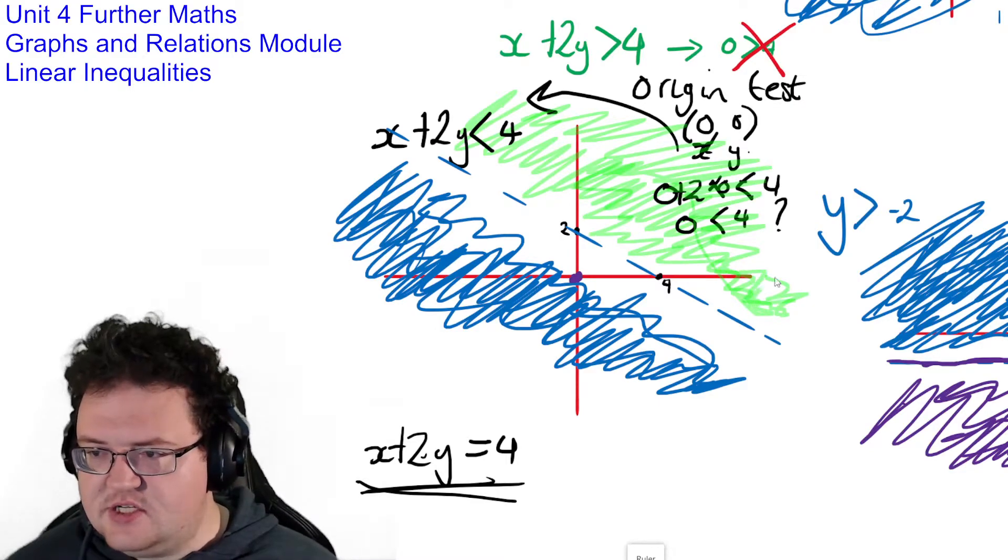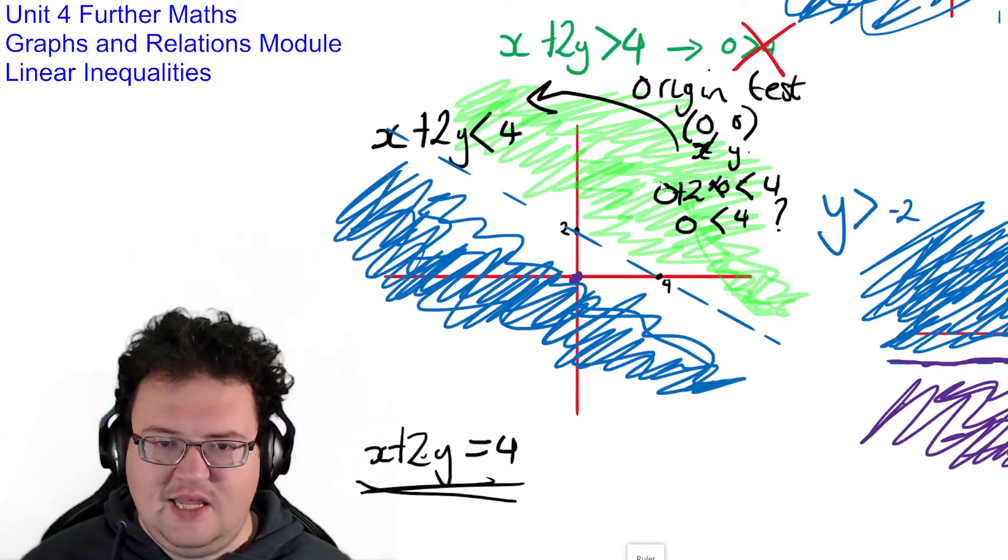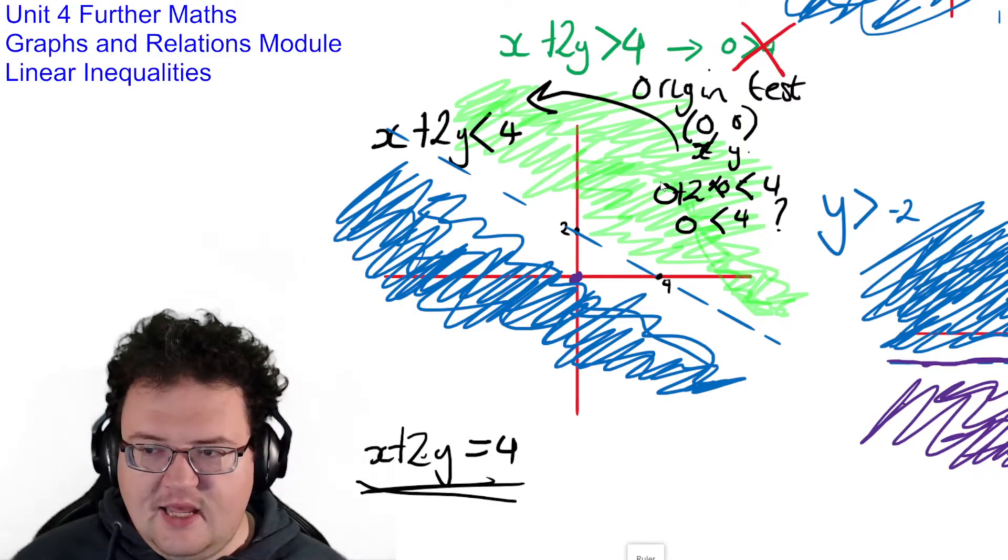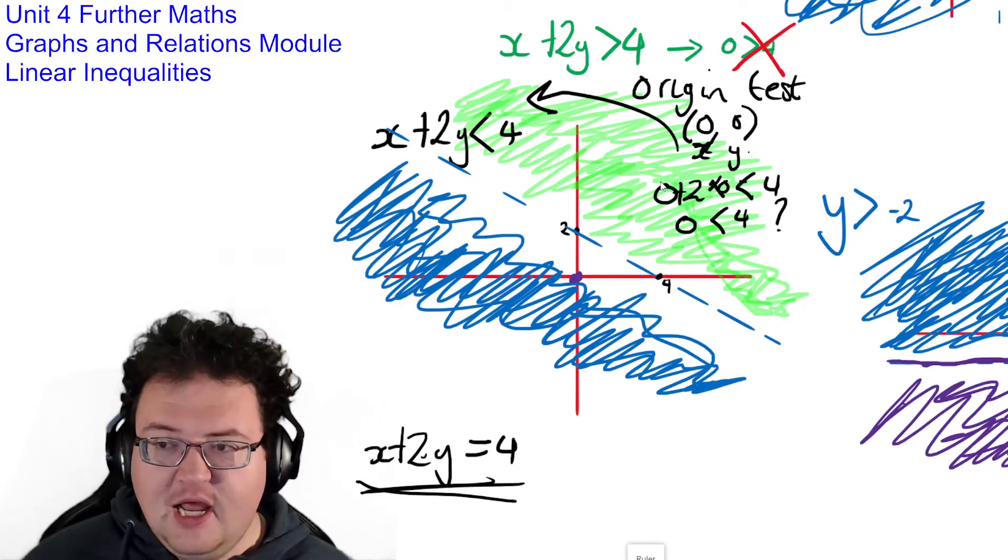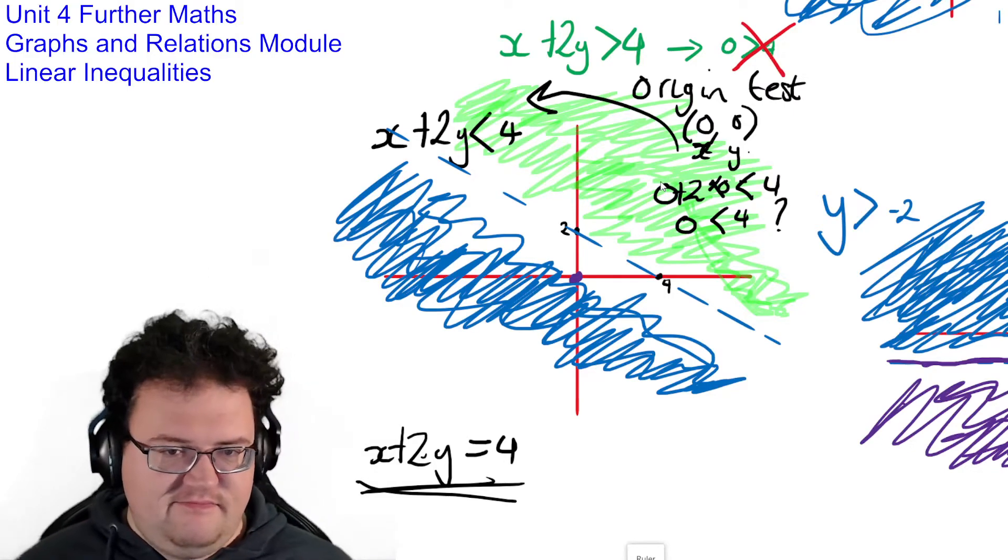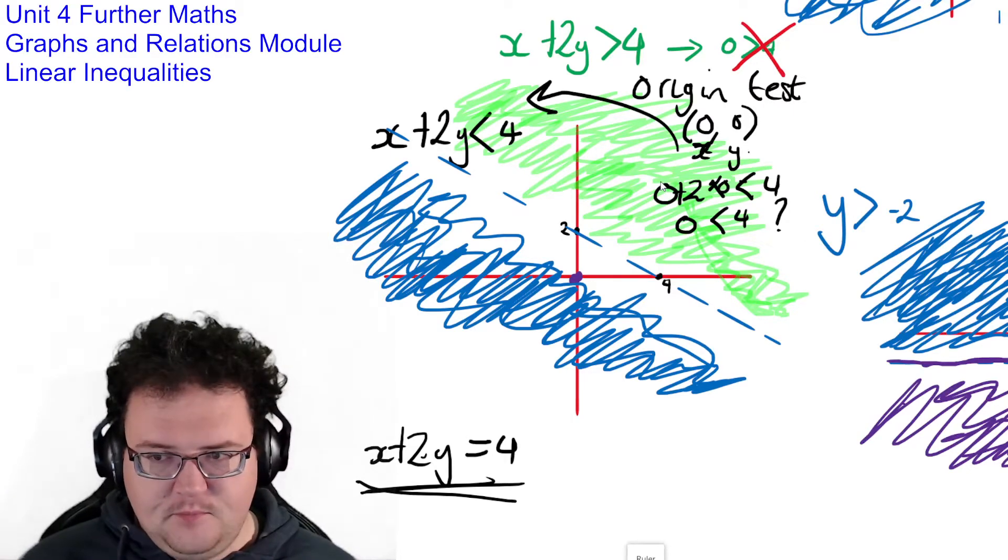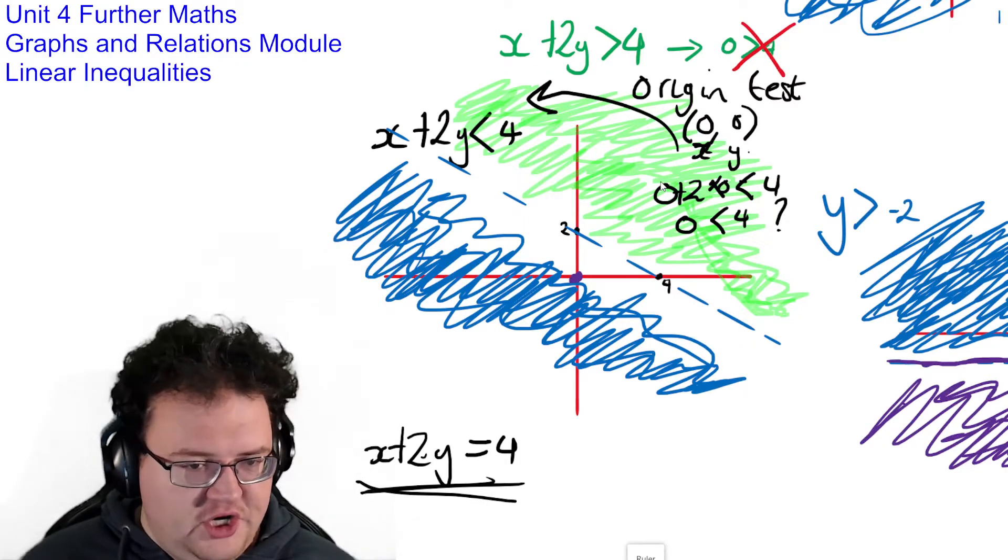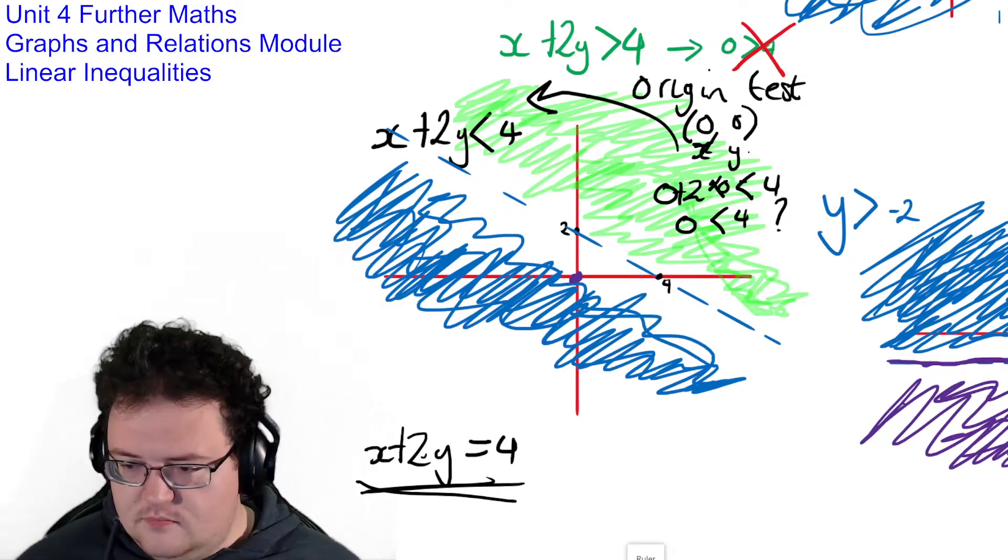So when you have linear inequalities like this, you need to think about where is 0, 0 in all of this? If the inequality is true, then you shade the side that has that point. Now you can do tests with any point. But the easiest one to do it with is the origin, because it's just zeros.